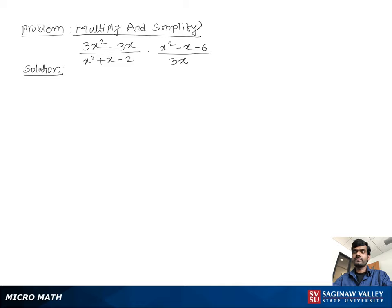Multiply and simplify: (3x² - 3x) / (x² + x - 2) times (x² - x - 6) / 3x. We multiply top to top and bottom to bottom.